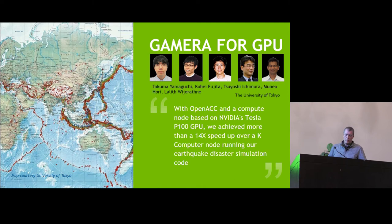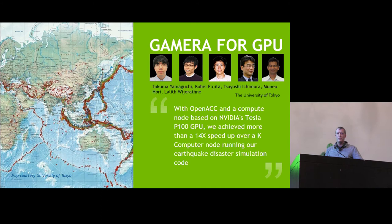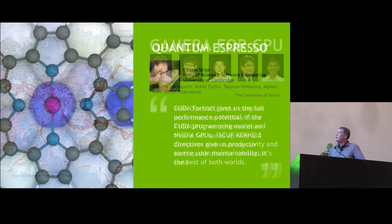GAMERA is an earthquake simulation code that has won a Best Paper Award at the Accelerator Workshop at Supercomputing two years in a row, and they're now gearing up for runs on Summit, the new system going in at Oak Ridge. We asked them what the performance was relative to a Xeon, and they said they don't know — they just run on the K computer, and they were able to port to OpenACC with really great results. They get really impressive linear speedups going from one to two to four Voltas on a node.